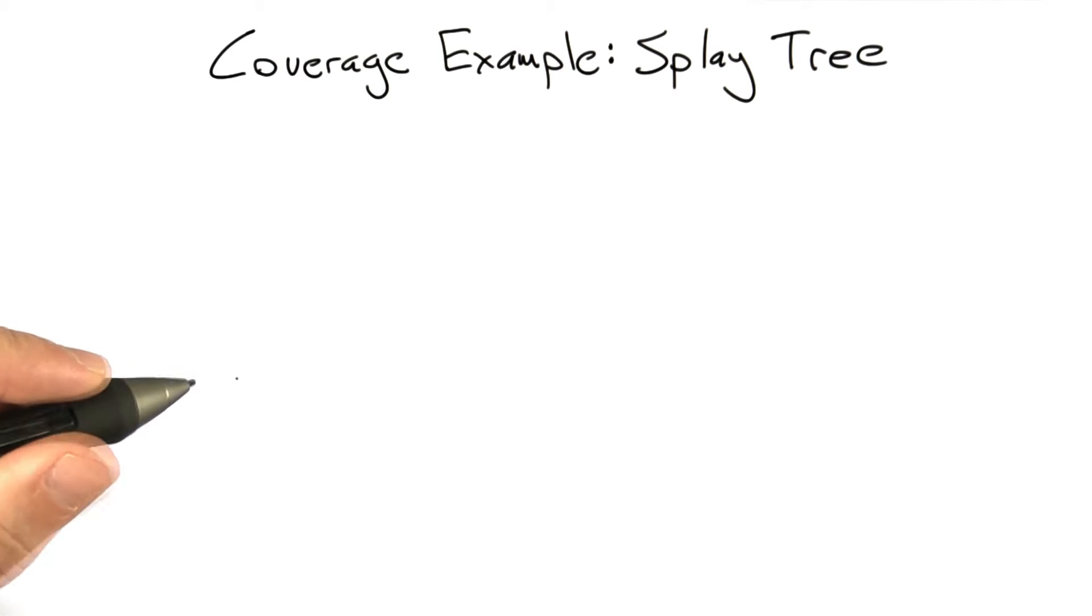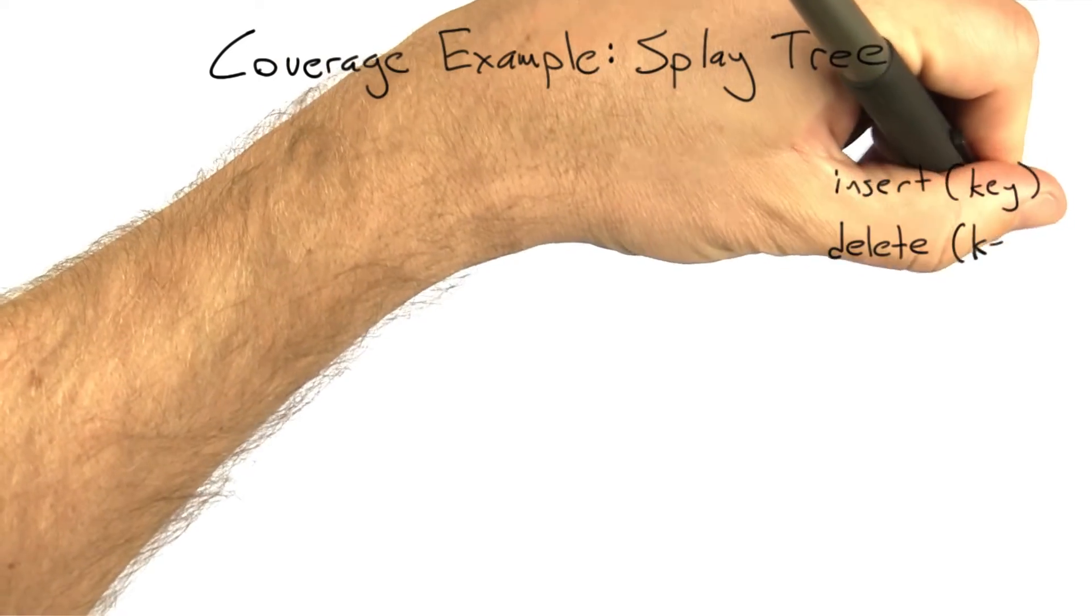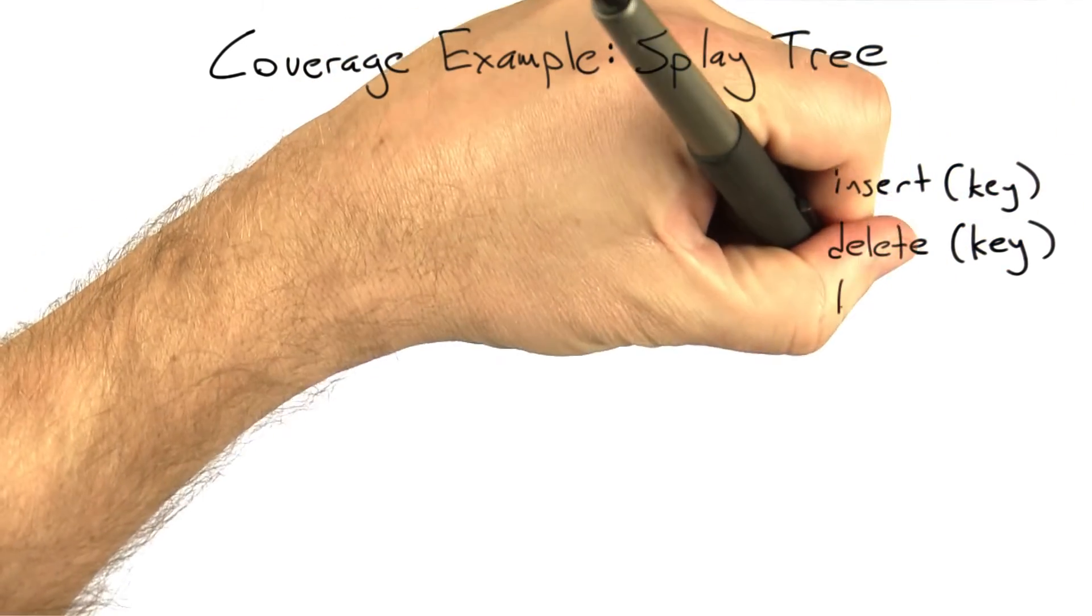And a binary search tree is a tree where every node has two leaves, and it supports operations such as insert, delete, and lookup.